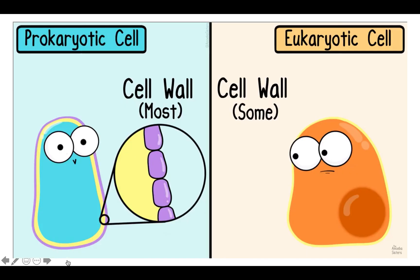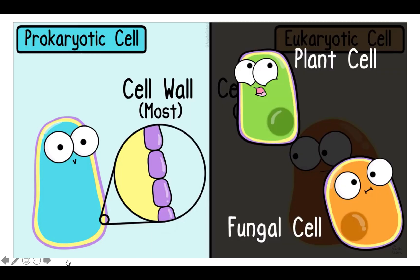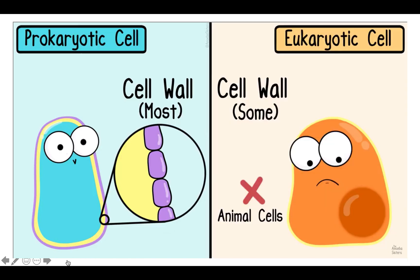As for cell walls, most prokaryotic cells have cell walls. Many eukaryotic cells — plant cells and fungal cells, for example — can have cell walls. But there are plenty of eukaryotic cells that don't have cell walls, such as animal cells.